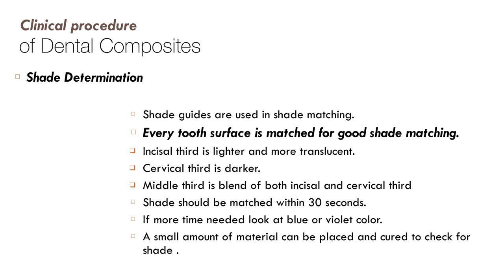Record the shade at each appointment. If a patient returns with a fractured restoration years later, having the recorded shade allows you to redo it accurately. If your eyes get fatigued, look at a blue or violet color to relax your vision before remeasuring the shade. A small amount of material can be placed on the tooth to verify the shade, keeping in mind that enamel is only about 0.3 to 0.7 mm thick — too much composite will make the shade appear gray.